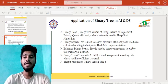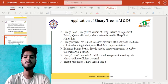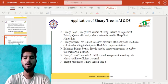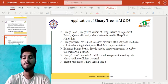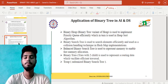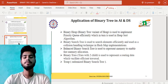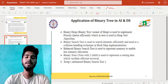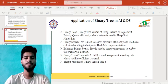Application of binary tree in AI and DS: Binary heap, a variant of binary tree, is used to implement priority queues efficiently, which is used in heap sort algorithm. Binary search tree is used to search elements efficiently. Collision handling technique in hash map implementations uses balanced binary search trees to represent memory for fast memory allocation. Binary trees with two children are used to represent routing data which enables efficient traversal. Tree optimized search tree and randomized search tree are also applications.